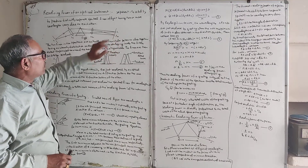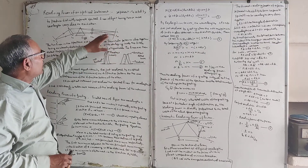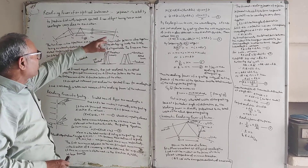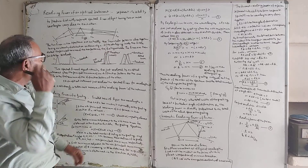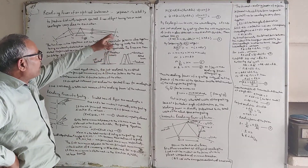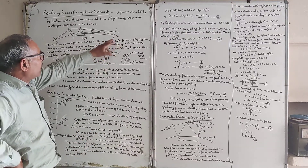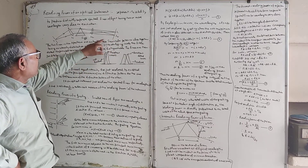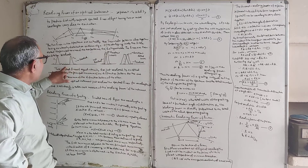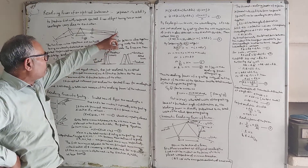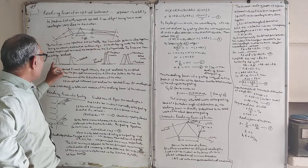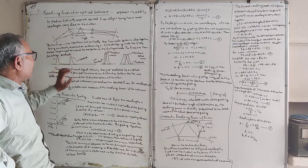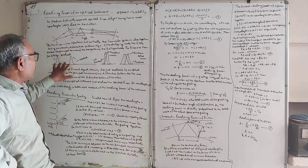The two lines in the spectrum are actually two Fraunhofer diffraction patterns close together, having an intensity distribution as shown in the figure. This shows us the waveform for lambda 1 and lambda 2 at different distances, with a condition to be resolved.